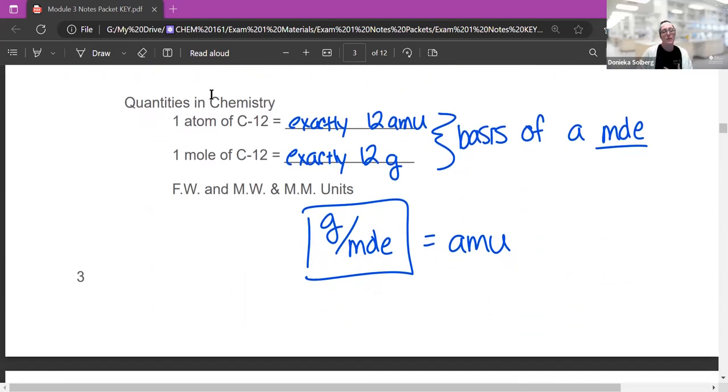Since we measure the mass in the lab, not the number of particles, we use the mole to convert between mass and number of particles. Because things really react on the particle level. So that's why we need to know how many particles or how many moles there are in order to do a reaction and predict how much you're going to make and stuff.